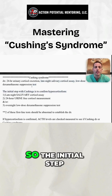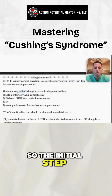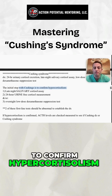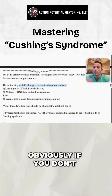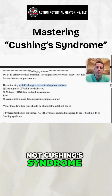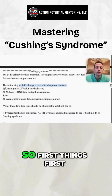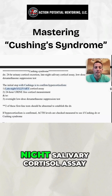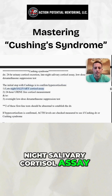The initial step with Cushing's is always to confirm hypercortisolism. Obviously, if you don't have high cortisol, it's not Cushing's syndrome. So first things first, you do a late-night salivary cortisol assay.